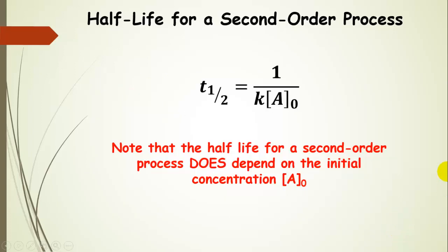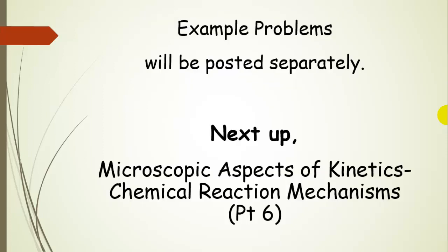The equation for the half-life for a second order process is: t-half equals 1 divided by the rate constant k times the initial concentration of A. Notice that the half-life for a second order process does depend on the initial concentration of A — unlike first order. Example problems will be posted separately. Next up, we're going to talk about microscopic aspects of kinetics, meaning chemical reaction mechanisms, and that will be part six.